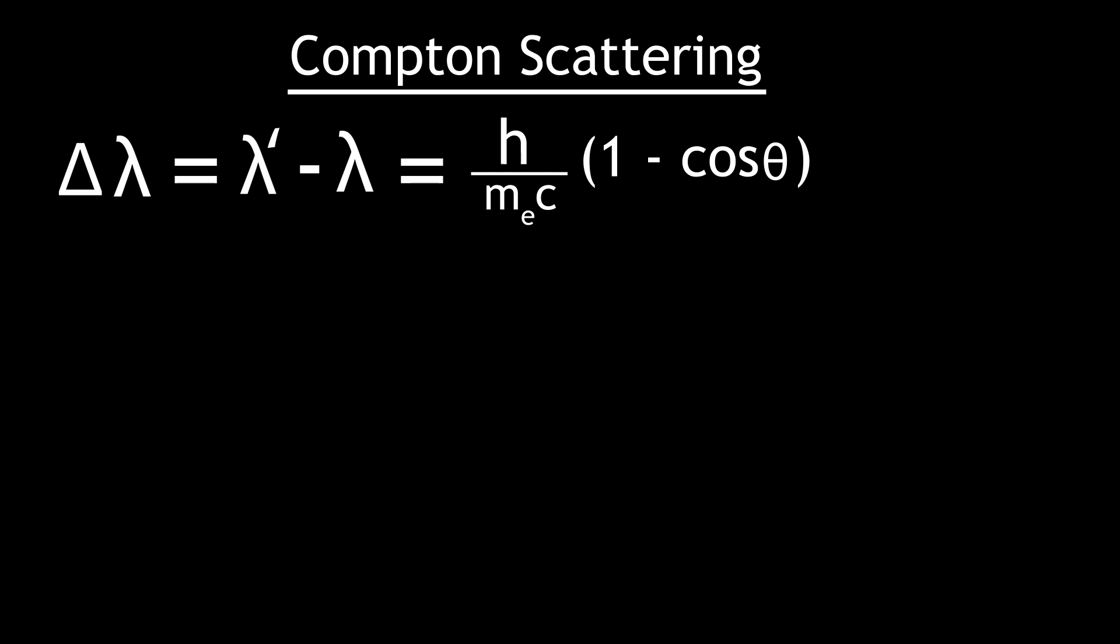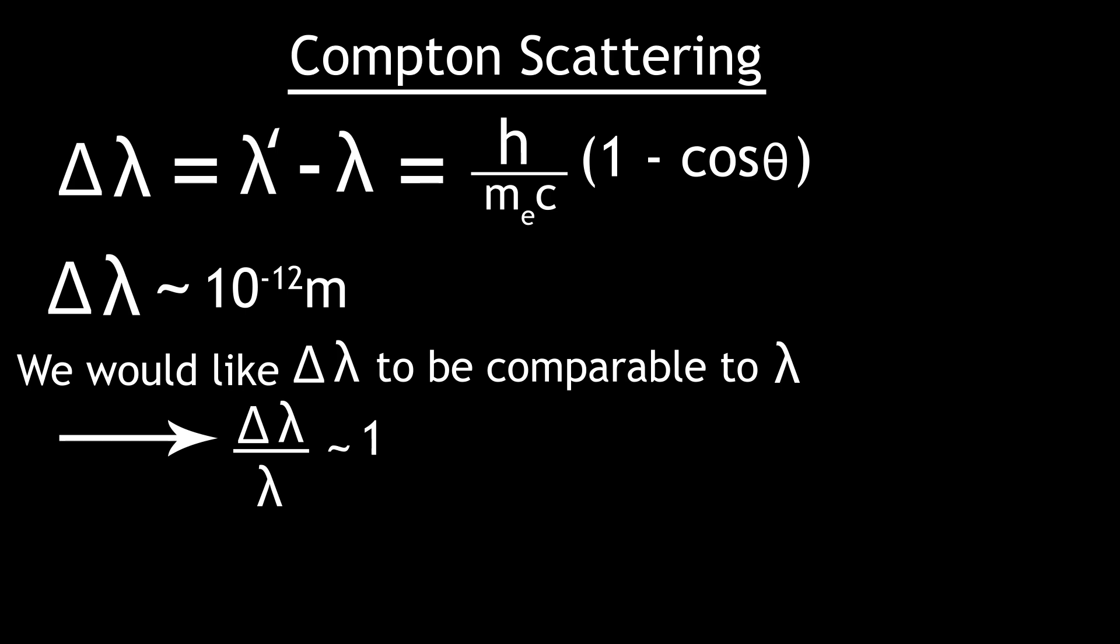This change in wavelength is going to be of the order 10 to the minus 12 meters. In order for this to be comparable to the initial wavelength, Compton scattering is best done with x-rays or gamma rays which have similar or smaller wavelengths.